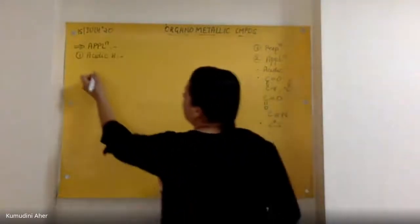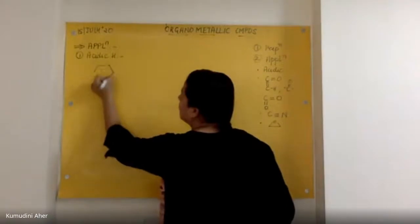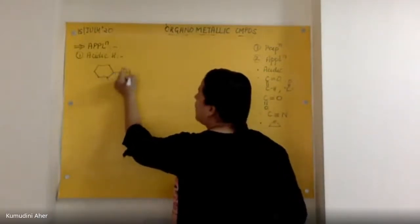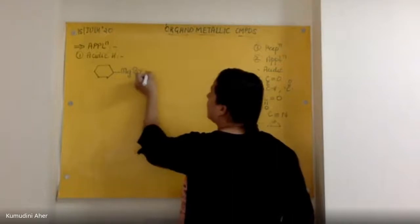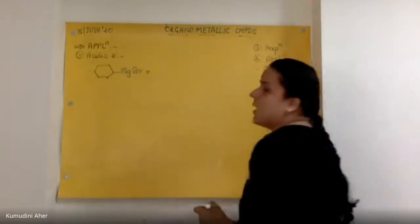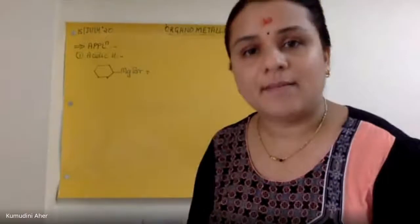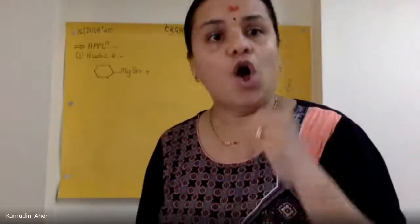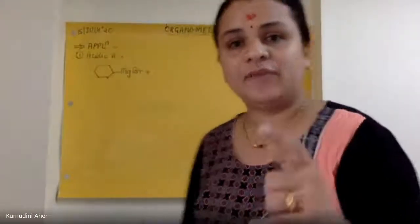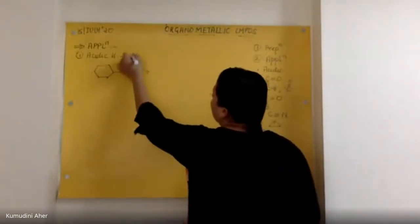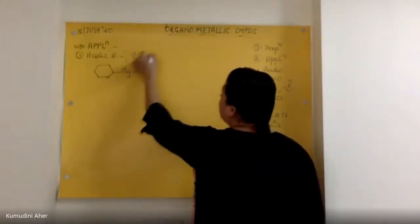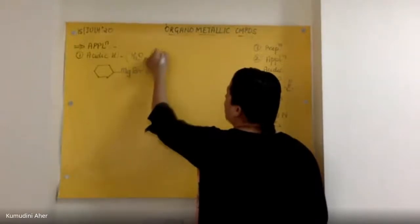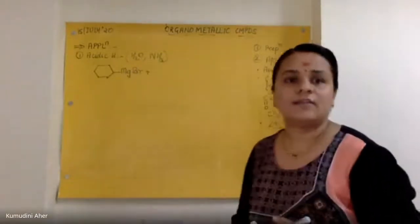So that Grignard's reagent, let me take as cyclohexyl magnesium bromide. Now, acidic hydrogen can be obtained using one water molecule or one ammonia molecule. We will see in both cases. So I am going to take water also and I am going to take ammonia also.